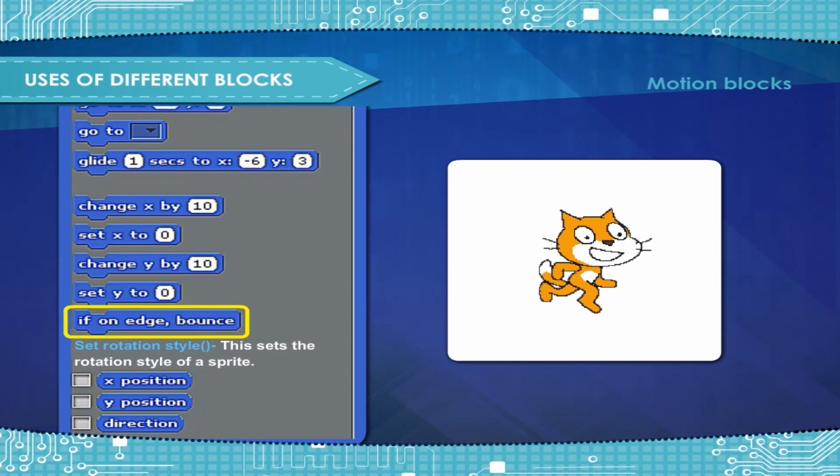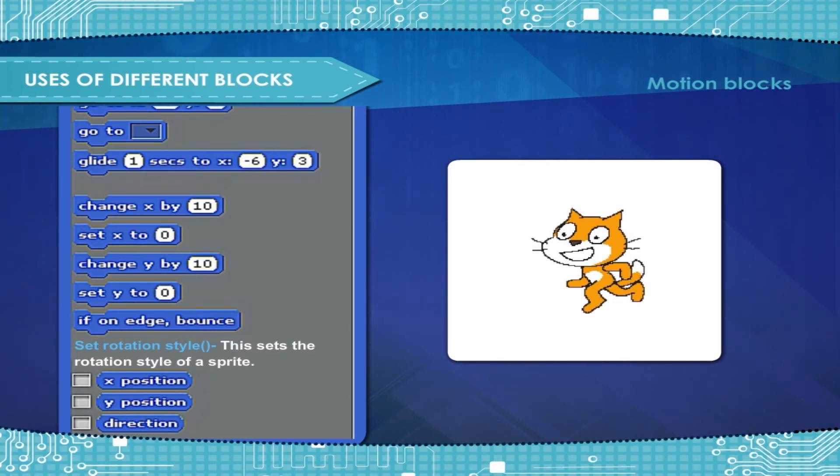If on edge bounce: If touching the edge of the screen, the sprite's direction flips over. Set rotation style: This sets the rotation style of a sprite. Scratch has three motion reporter blocks which are X position, Y position, and Direction.